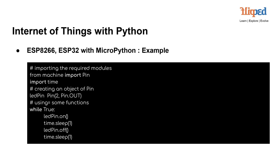The provided code demonstrates how to control an LED using MicroPython on a microcontroller such as the ESP8266 or ESP32. The code starts by importing the Pin class from the machine module, which allows access to the microcontroller's GPIO pins, and the time module for time-related operations. The next line creates an object led_pin of the Pin class, initializing GPIO pin number 2 as an output pin. This pin will be used to control the LED.